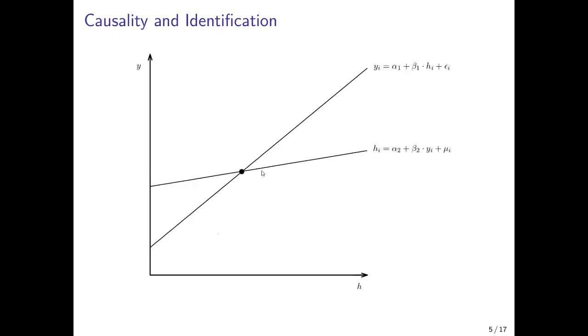Empirically, the data point that we observe is given at the intersection of these two curves because that's basically the equilibrium where both equations are fulfilled and we can determine population health and per capita GDP for this particular country i.